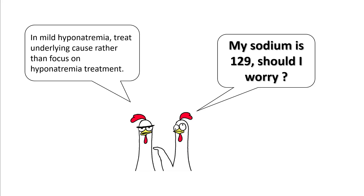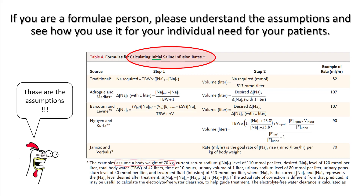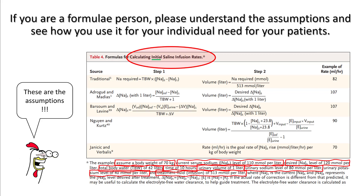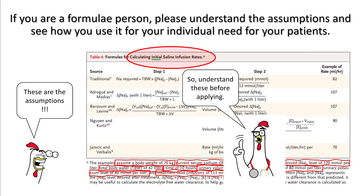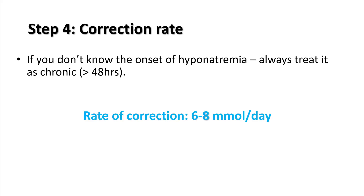In mild hyponatremia, treat the underlying cause rather than focusing on hyponatremia treatment directly. Be aware that multiple formulas are available online and in books. Calculating sodium deficit and infusion rates involves many assumptions, so make sure you understand these before applying them. All equations give only initial infusion rates — depending on how much the patient eats, makes urine, or has insensible losses, rates will change. If you do not know the onset of hyponatremia, always treat it as chronic. Chronic hyponatremia is defined as hyponatremia for more than 48 hours. The correction rate should be 6 to 8 mEq per day — try to avoid increasing it more than 8 mEq in 24 hours.